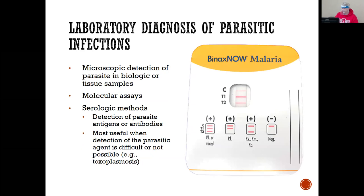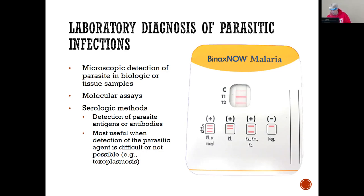This looks pretty similar to things we've seen already. We've got a BinaxNOW malarial test with a control line, test one, and test two. We've got PV, PM, and PO in one area and PF or mixed in another. For malaria — Plasmodium falciparum is PF. What about PV? Plasmodium vivax.